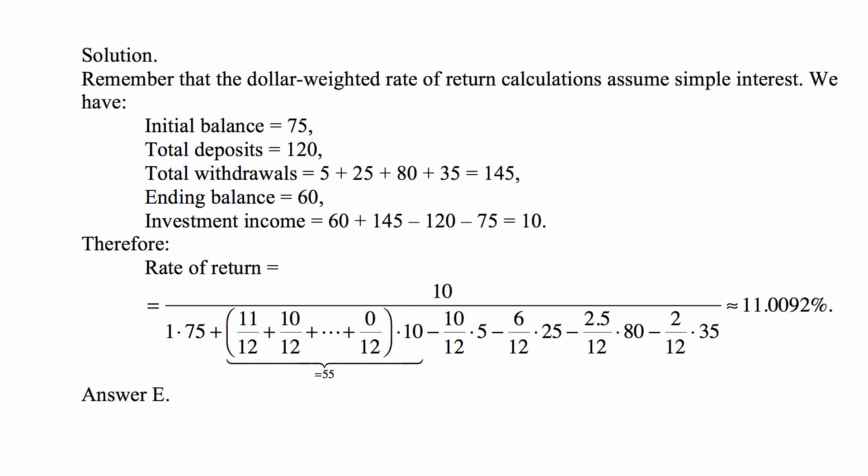In this solution, we figure out how much income is in the account. The initial balance is 75. The total deposits are 120 — 10 every month. Total withdrawals are 5 plus 25 plus 80 plus 35, so 145. The ending balance is 60. You have 60 at the end and took out 145, and you started with 75 and added 120, so the net is an increase of 10.